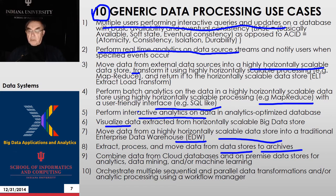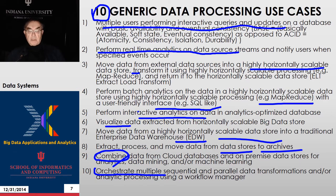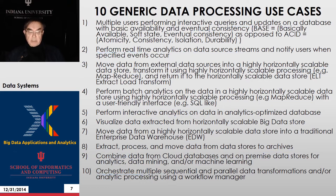Scenario seven moves data from a scalable data store — MapReduce or NoSQL — into a traditional warehouse. Scenario eight goes from data stores to archives, a classic enterprise activity. Scenario nine combines data from databases in the cloud with local data for various processing. The final scenario is a workflow scenario linking multiple scenarios together. This lesson covers the first five, lesson two covers science variants, and lesson three covers the last five.